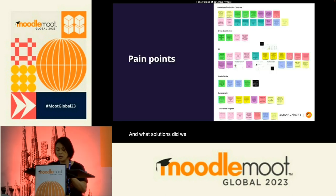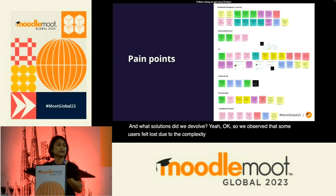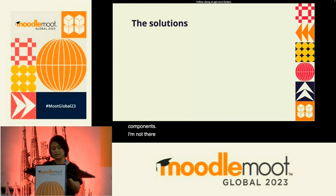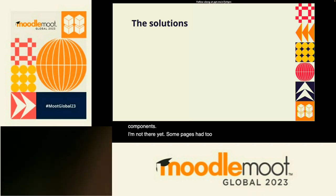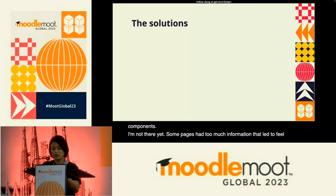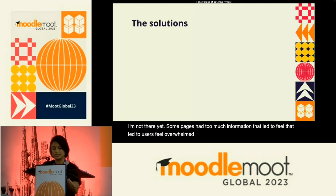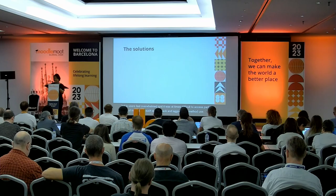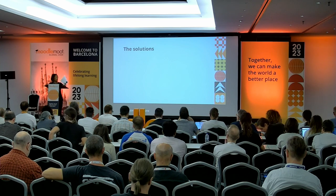We observed that some users felt lost due to the complexity and inconsistencies in the gradebook components. Some pages had too much information that led users to feel overwhelmed, and it was at times difficult to access a particular piece of information, such as feedback and aggregation method used. Some common actions were also tedious due to the number of steps required, such as locking and hiding grades.